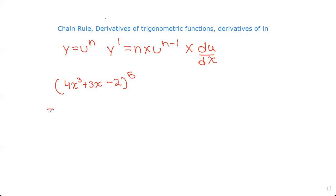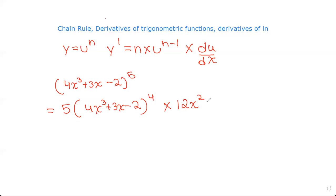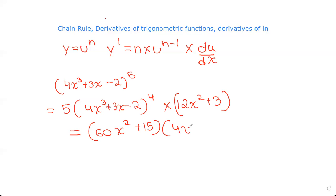Using the power rule, we put 5 as the coefficient: 5 times (4x³ + 3x - 2) to the power of 4. But we can't leave it like this — we have to further differentiate whatever is inside the bracket. Differentiating inside gives 12x² + 3. So the full derivative is 5(12x² + 3)(4x³ + 3x - 2)⁴, which simplifies to (60x² + 15)(4x³ + 3x - 2)⁴.